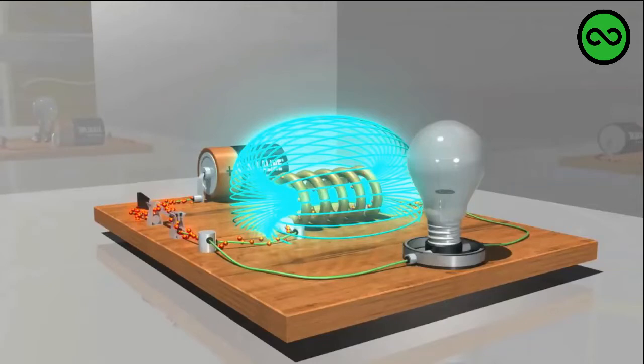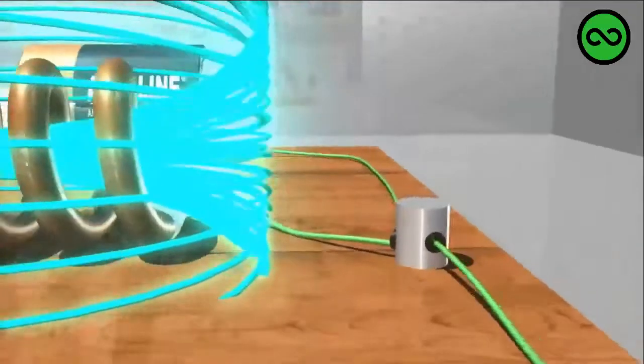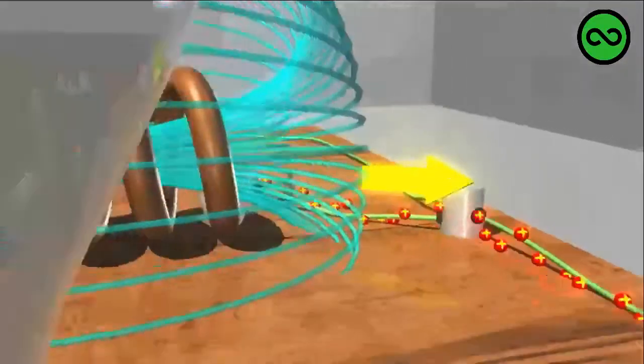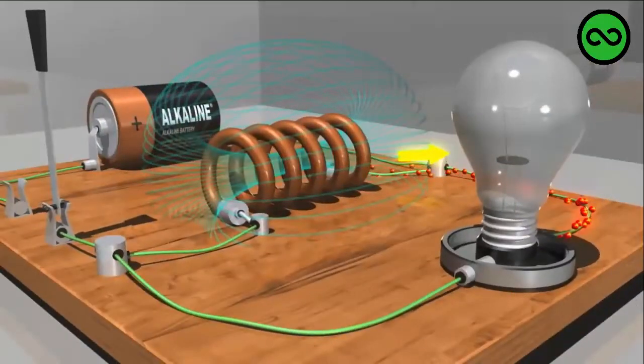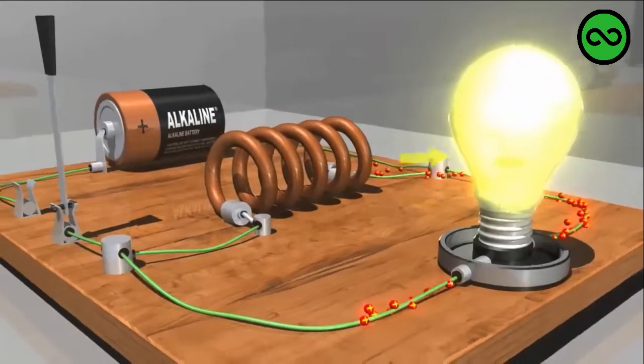The same phenomenon occurs when the magnetic field is shrinking, which happens when we open the switch and stop current flow from the battery. Once again, the back EMF opposes the change that created it.